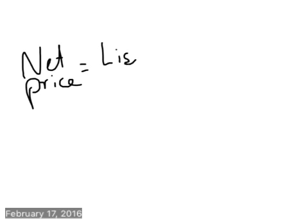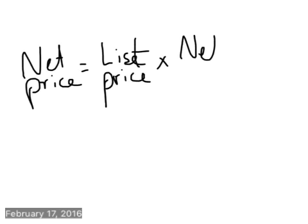Then the next formula that you would use to find the net price would equal the list price, if I can spell list, price, multiplied by the net price rate, or that thing you just found when you did that.